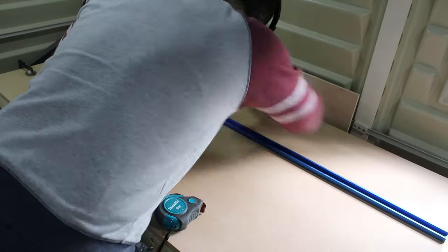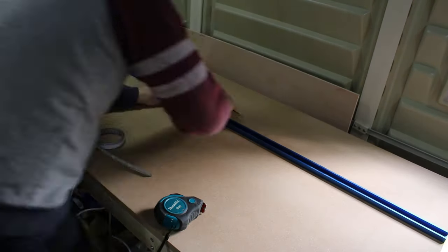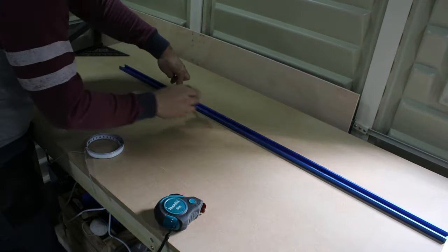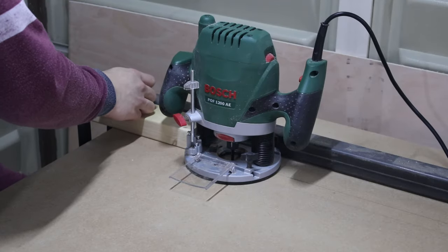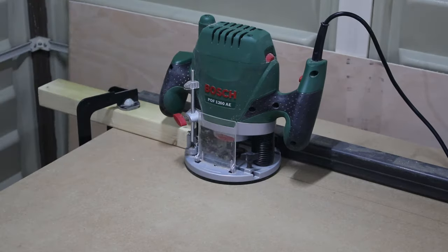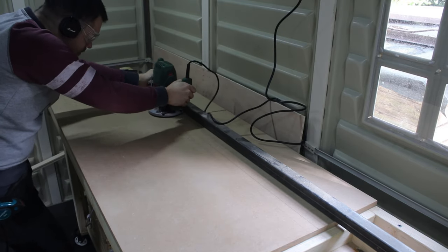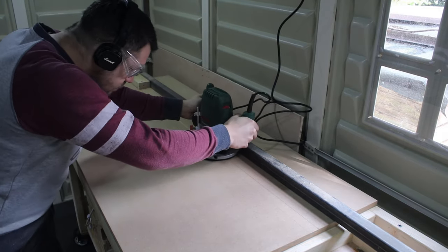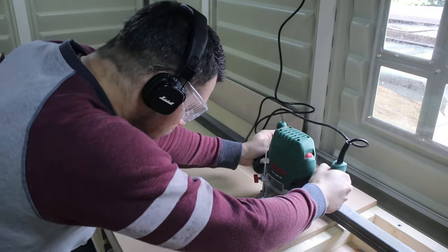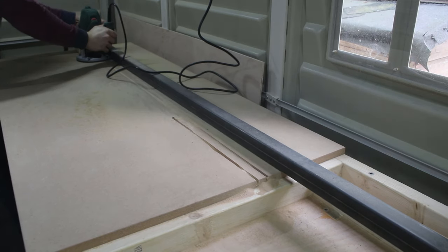I started off placing a T-track into the workbench. I did not want to have it all the way, leaving space for further upgrades. I marked where I wanted to place it, then I routed out this area. I set the depth of the router bit to the depth of the T-track, so it will be flush with the surface of the workbench.